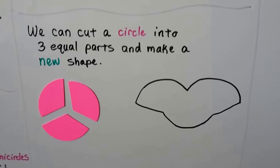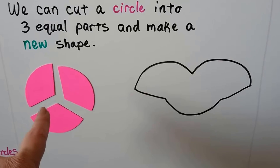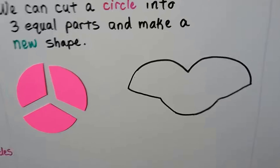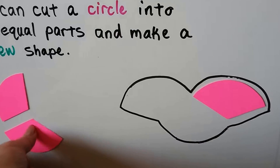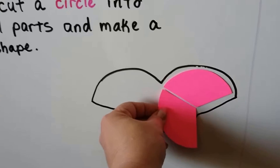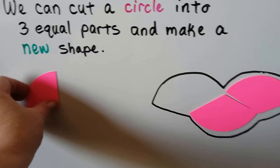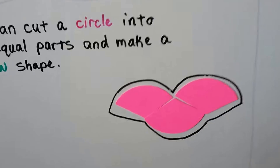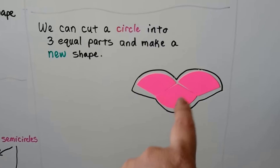We can cut a circle into three equal parts and make a new shape. We have one, two, three pieces. All we have to do is put one like this — see, the circle would have been like this — but we're going to put this end on here and then take the last one and go like this. It could almost be like bird wings. Can you imagine bird wings with that as the body?